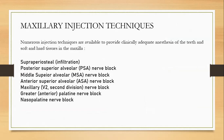Numerous injection techniques are available to provide clinically adequate anesthesia of the teeth and the soft and hard tissue in the maxilla. We can give the supraperiosteal infiltration or go for the nerve blocks. In the maxillary, we have the posterior superior alveolar nerve block, middle superior alveolar nerve block, anterior superior alveolar nerve block, the maxillary nerve block, the greater palatine nerve block, and the nasopalatine nerve blocks — two on the palatal side and two or three on the buccal side.